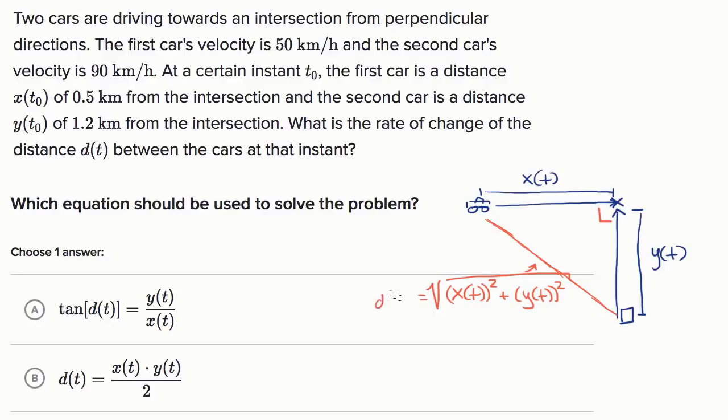This would be d(t). Or we could say that d(t) squared is equal to x(t) squared plus y(t) squared. So that's the relationship between d(t), x(t), and y(t).